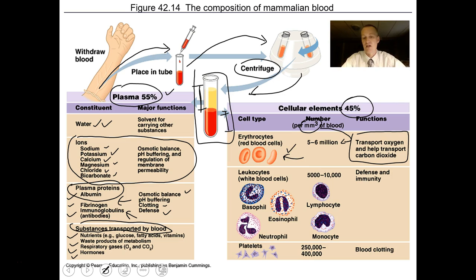The main job of red blood cells is to transport oxygen and carbon dioxide. There is a protein inside called hemoglobin that helps carry those gases, mainly oxygen. Another part of the cellular component are white blood cells, also known as leukocytes — leuka means white, cyte means cell. These are far less numerous than red blood cells but have different kinds of jobs.